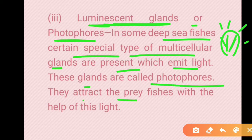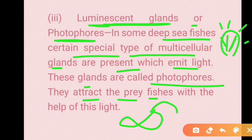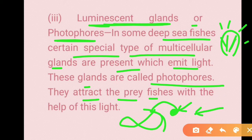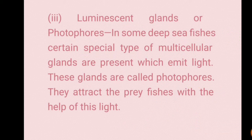Photophores attract prey by emitting light. The prey is drawn toward the light source, at which point the fish can open its mouth and consume the prey. So these luminous glands present on the skin serve both visibility and predation functions and are considered derivatives of the integument.